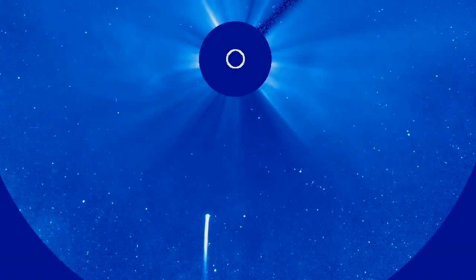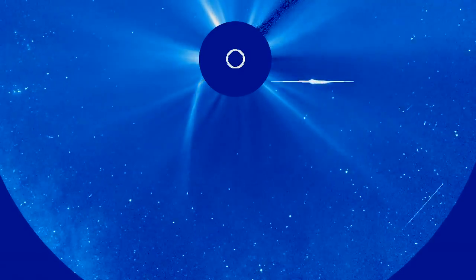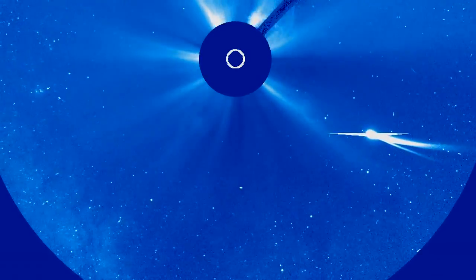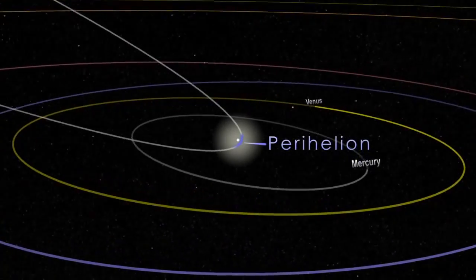All the comets that we can see from Earth are orbiting the Sun, but some belong to a special group called sungrazing comets. Sungrazers are comets that come very close to the Sun at their nearest approach, a point called perihelion.